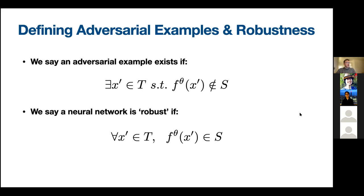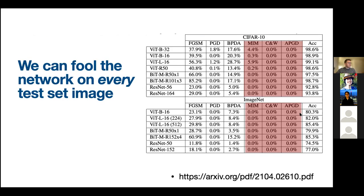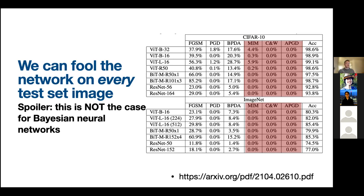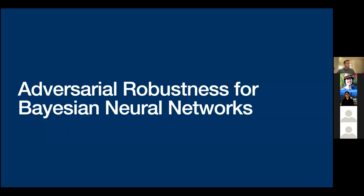Using T defined as a single-pixel magnitude change — the same way as the panda example — for every single test input on transformers and ResNets, we can create an adversarial example. This is actually not the case for Bayesian neural networks — spoiler alert. We'll see exactly how that works and why, but first we need to define adversarial robustness for Bayesian neural networks, which is what my research focuses on.